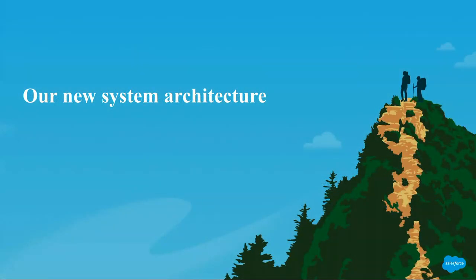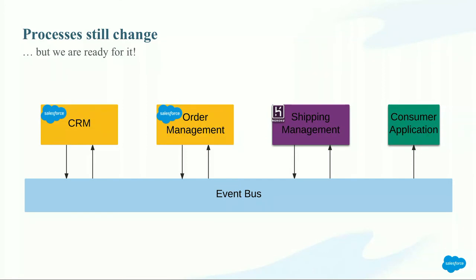So our new system architecture - how does it look? Well, it could look like this: we have our modules, our systems, our integrations, our consumer applications, and we have the event bus. That's it. We publish, we subscribe, all the dependencies are gone. Our CRM module is just the web-to-lead in our example. The order management is very simple. Every developer you hire, you can give them the order management and in a week they are the expert for order management. That's one of the big advantages of really going that way.